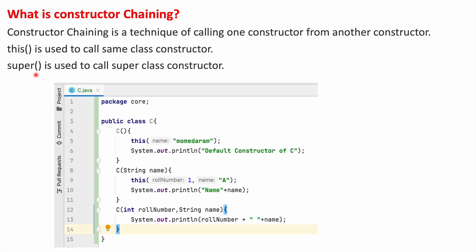In this example, we have three constructors: a no-argument constructor, a one-argument constructor, and a two-argument constructor. From the no-argument constructor, we are calling the one-argument constructor, and in the one-argument constructor, we are calling the two-argument constructor.